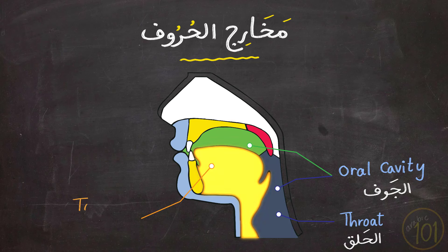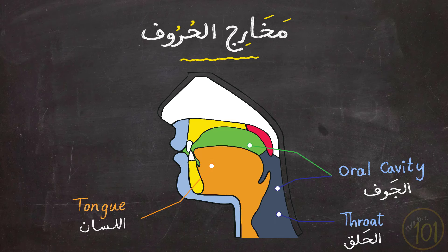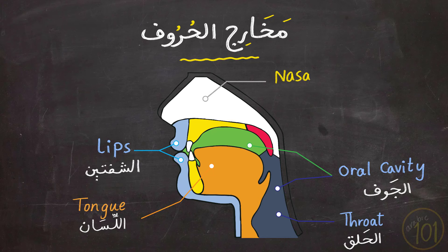Third, the tongue, which is al-lisan. Next, we have the lips. These are al-shafatayn. And finally, we have the nasal cavity, which is al-khayshum.